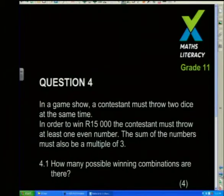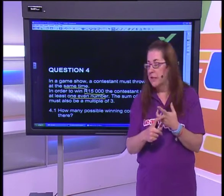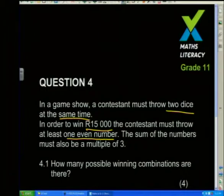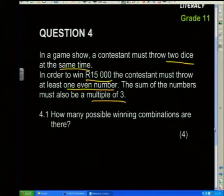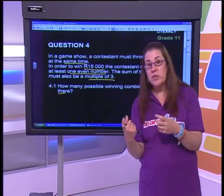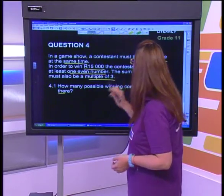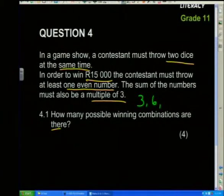In a game show, a contestant must throw two dice at the same time. In order to win 15,000 rand, the contestant must throw at least one even number — meaning one of the dice must land on a 2, 4, or 6 — and the sum of the numbers must also be a multiple of three. How many possible winning combinations are there? This is quite an involved question because we're looking at two things: we need an even number, and we need a multiple of three. Multiples of three are 3, 6, 9, and 12 — I don't need to go further because the maximum on two dice is 6 + 6 = 12.